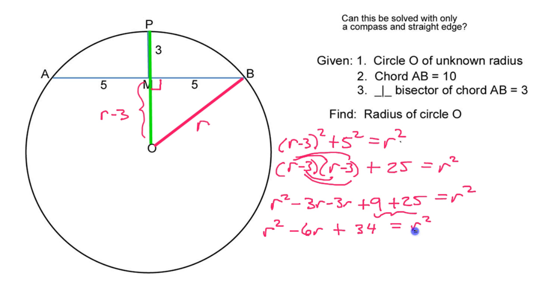Now, notice we have R squared on both sides. So when we go to subtract R squared from both sides, they both cancel out. So that leaves us with negative 6R plus 34 is equal to 0.